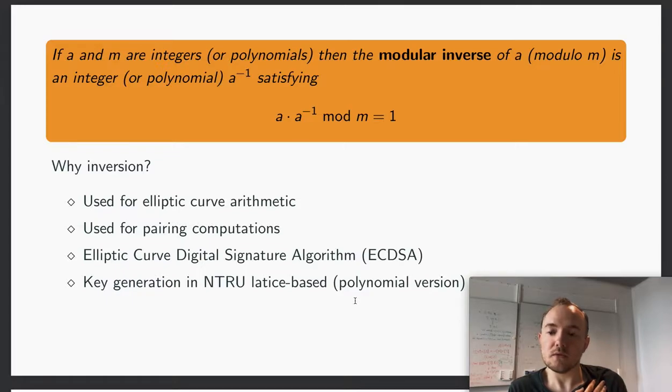So why did we choose this? It's used for elliptic curve arithmetic and pairing computations in elliptic curve cryptography, which we are aiming at being able to fully formalize. This is one step towards that full formalization, and furthermore it's used in different cryptographic protocols.